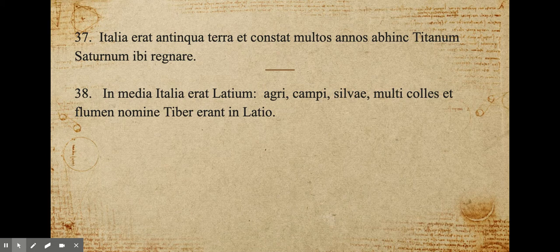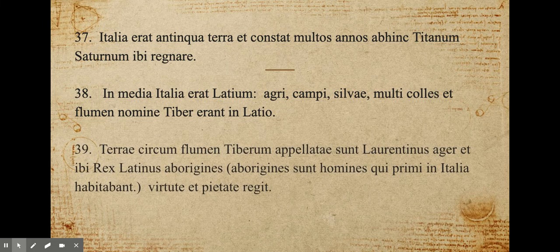Terra circum flumen Tiberum appellata sunt Laurentius ager — the Laurentian field. And there King Latinus ruled the aborigines with virtute et pietate, with virtue and pietas. The aborigines, or the natives, are the people who first lived in Italy.